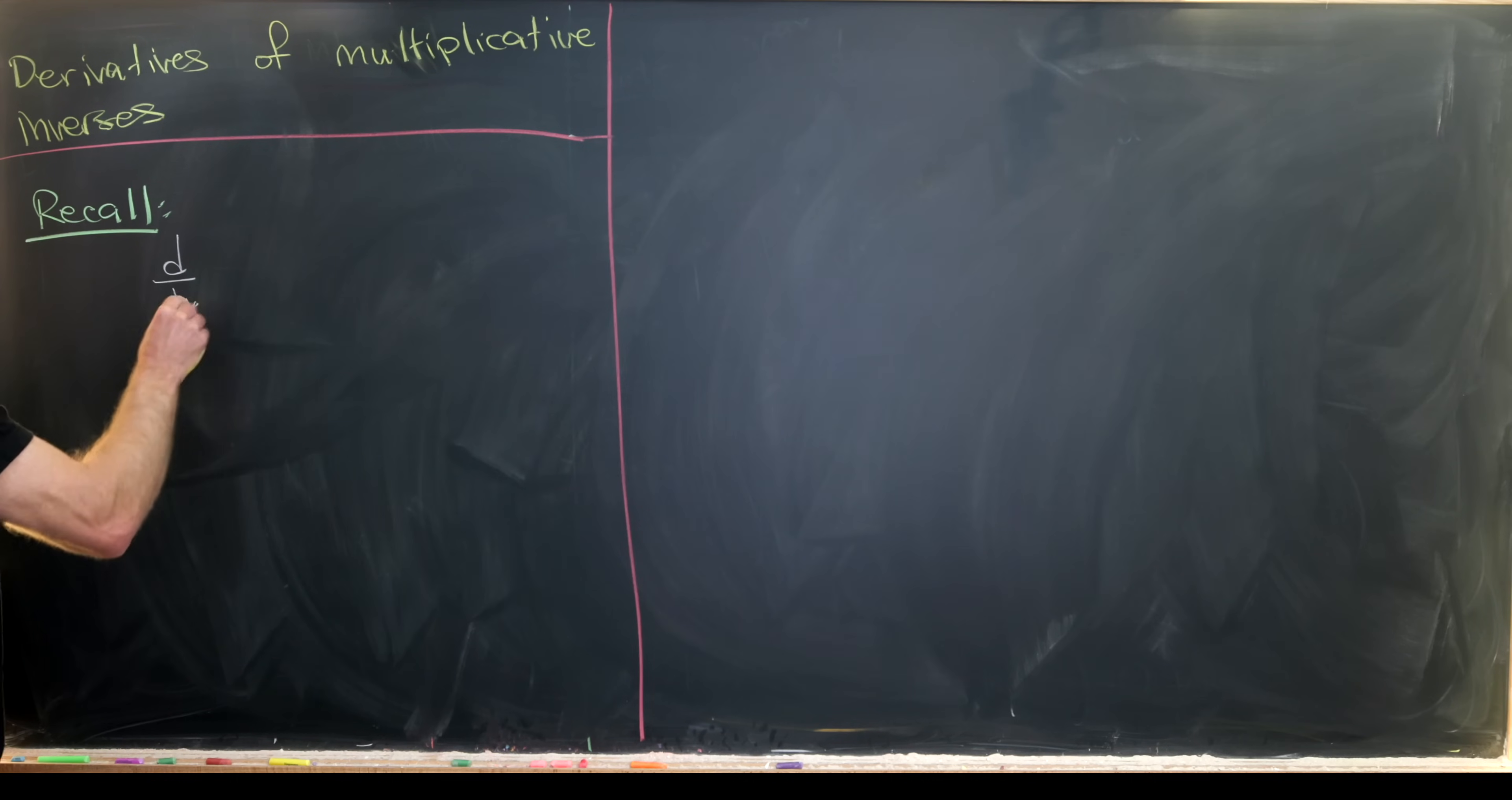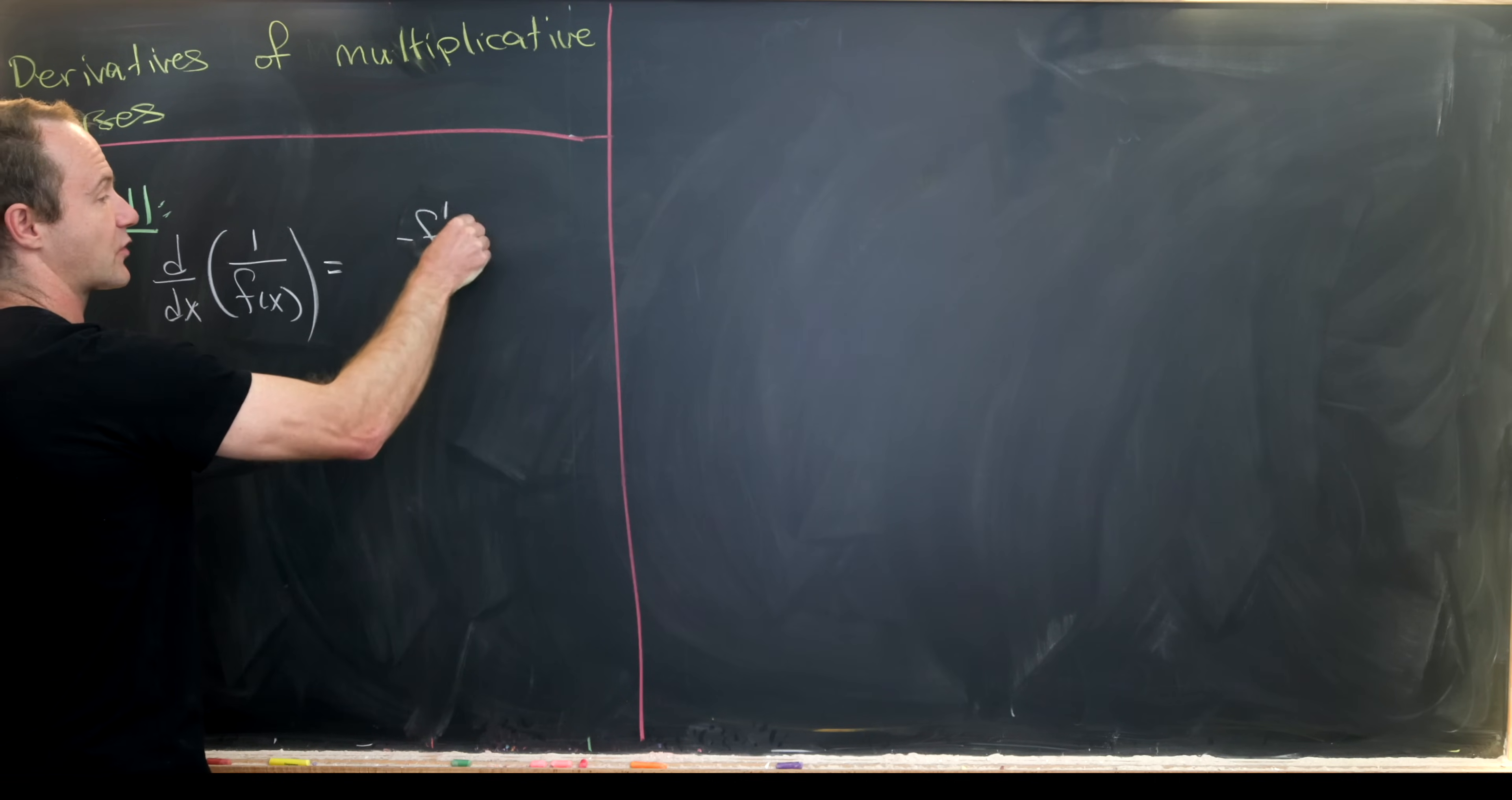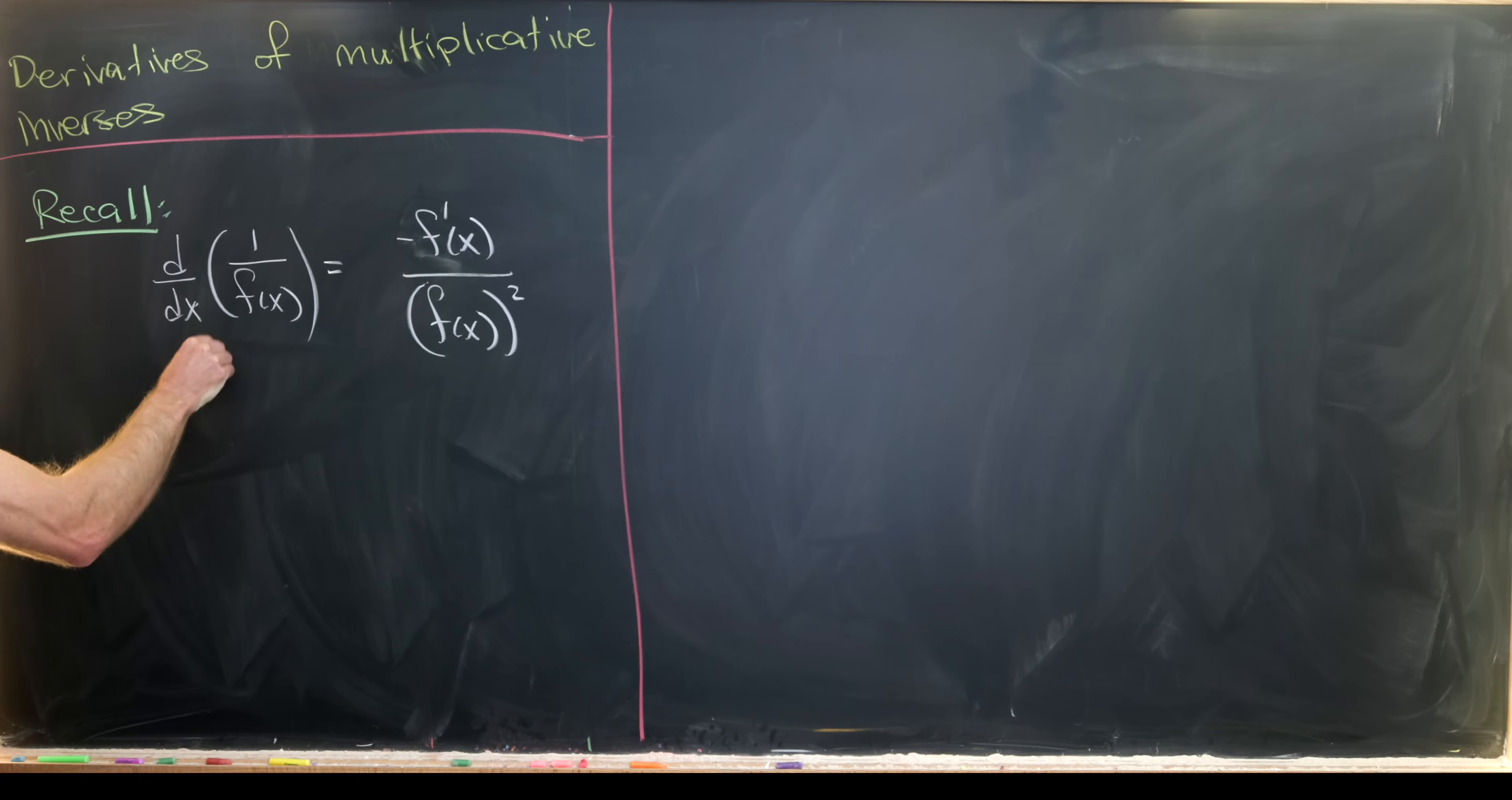If you take the derivative of the multiplicative inverse of a function, so the multiplicative inverse of f(x) would be 1/f(x), because they multiply together to give you 1, you would get negative f'(x) over f(x) squared. Let's look at a couple details of why that's the case.